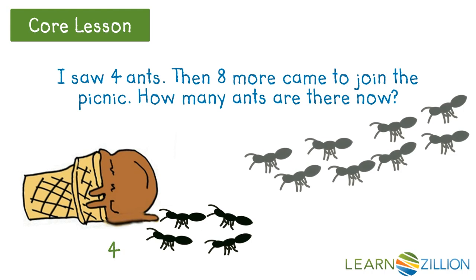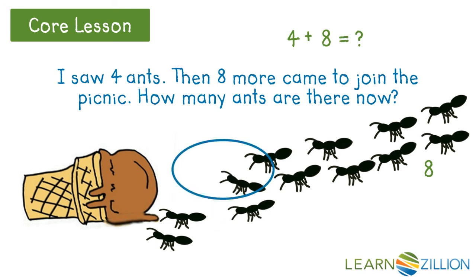There's 4. There's the 8 coming to join the picnic. 4 plus 8 equals... If I move 2 ants up here, I'm going to have a 10.